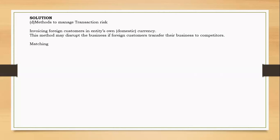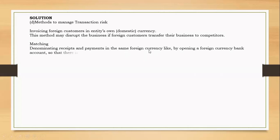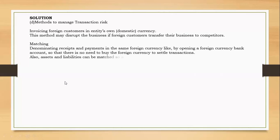Another internal method is matching. Matching means you net receipts and payments in the same foreign currency. For example, if you supply 2 million dollars but a customer owes you 2.5 million dollars, and both are settled after one month, you do not need to hedge everything separately — you net them and hedge only the net amount. These conversion rate concepts are studied in detail at the advanced financial management level.